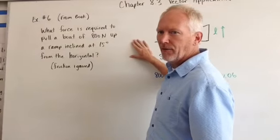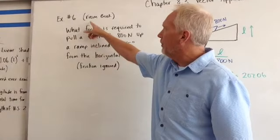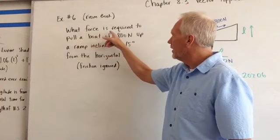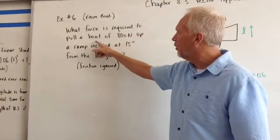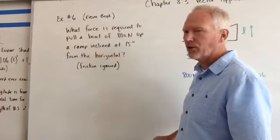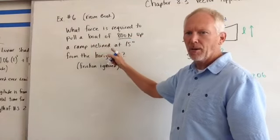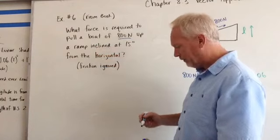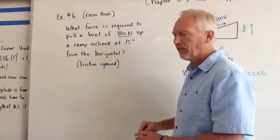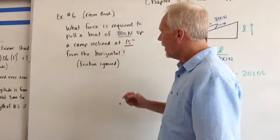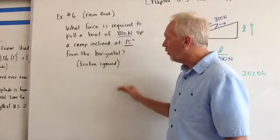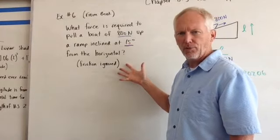Here we have an example from the book, example number 6. It says, what force is required to pull a boat of 800 newtons up a ramp inclined at 15 degrees from the horizontal? We're going to ignore friction for now.